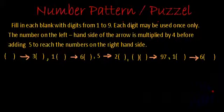Hi, in this puzzle we are given one statement and some blank spaces which we have to fill. So let's first read the statement. Statement says, fill in each blank with digits from 1 to 9, each digit may be used once only. The number on the left hand side of the arrow is multiplied by 4 before adding 5 to reach the number on the right hand side.